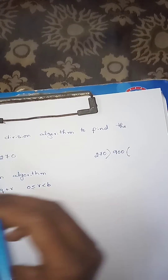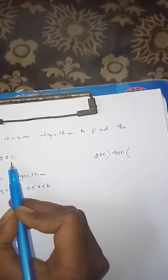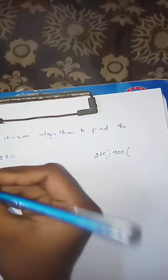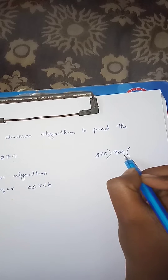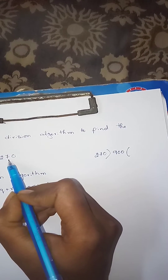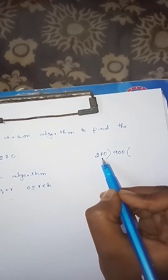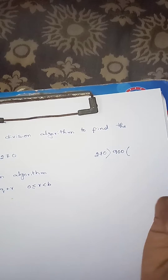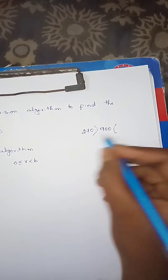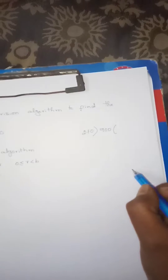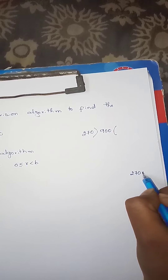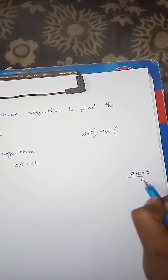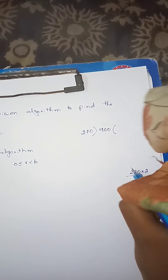If we solve this problem, 900 is the dividend and 270 is the divisor. We divide: 270 into 2 is called, first 2 times, 2 into 7 is 14.